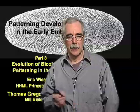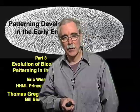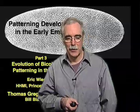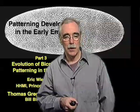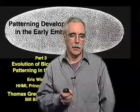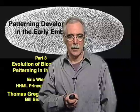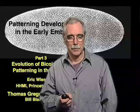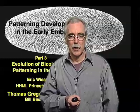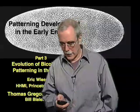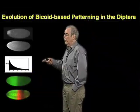For the last two parts of this lecture, we've been talking about how pattern is established in the early Drosophila embryo. We focused on a molecule called bicoid that is deposited as an RNA at the anterior end of the Drosophila egg during oogenesis in the mother, and then is translated into a protein and forms a protein gradient in the early embryo.